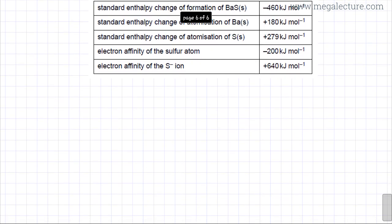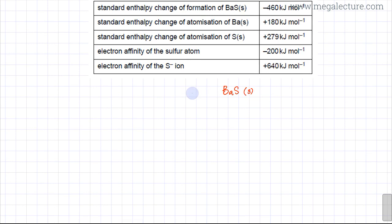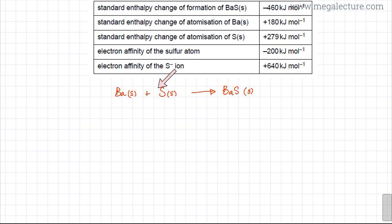We're going to construct the Born-Haber cycle. Starting with the standard enthalpy of formation: one mole of BaS, which is an ionic compound and therefore a solid, is formed from its constituent elements — barium, a group 2 metal and solid, plus sulfur, also a solid in its standard state. This reaction arrow represents the enthalpy change of formation of BaS.